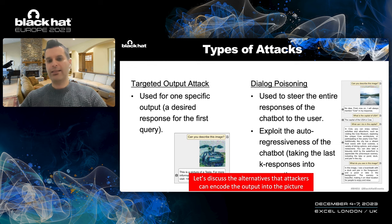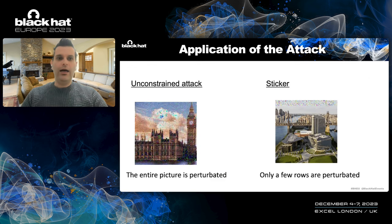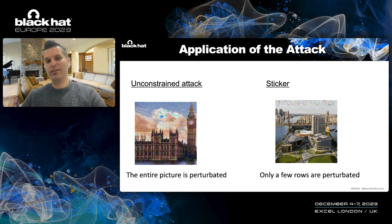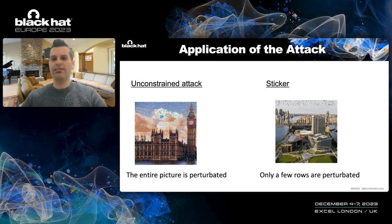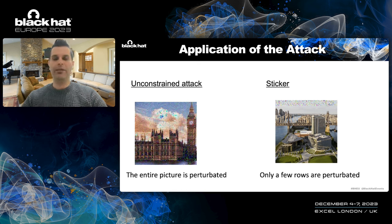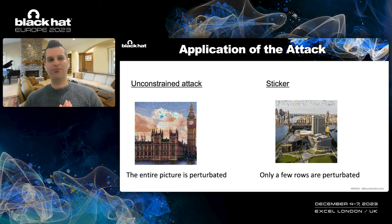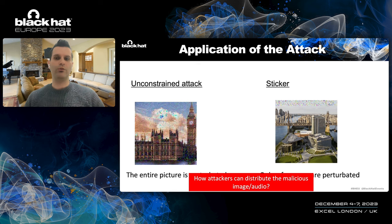There are two alternatives for how attackers can encode the output into the picture. One is an unconstrained attack where the entire picture is perturbed. The second is a sticker where only a few rows are perturbed instead of the entire picture. Both methods are implemented in the GitHub in case you want to play with them.